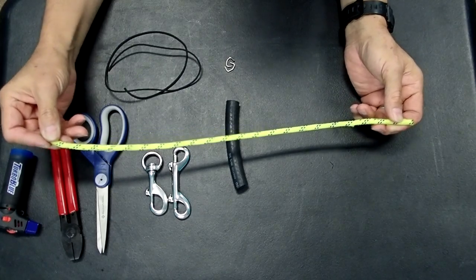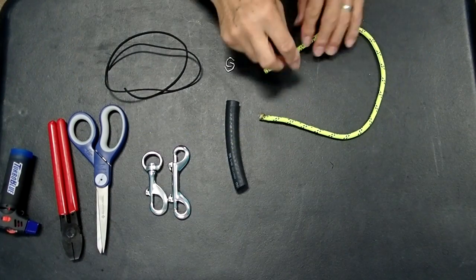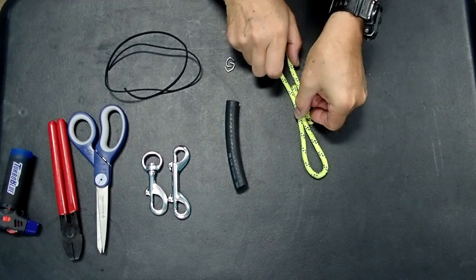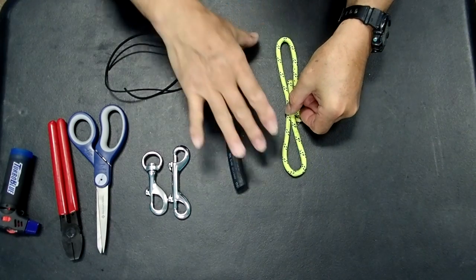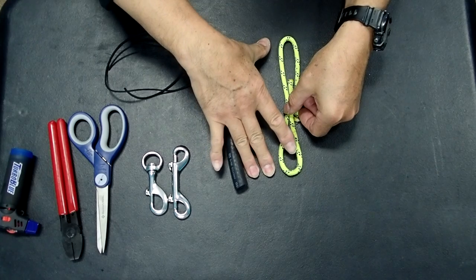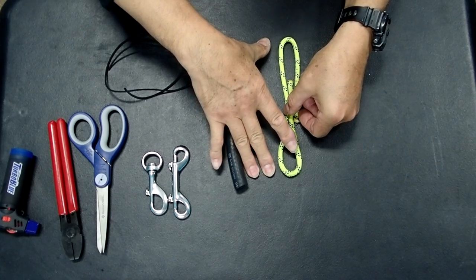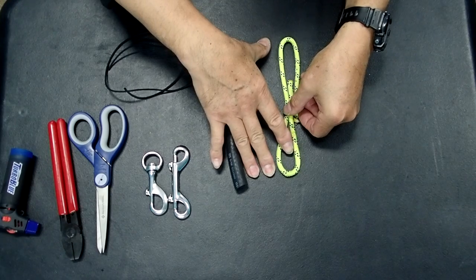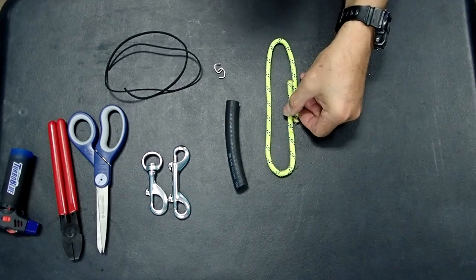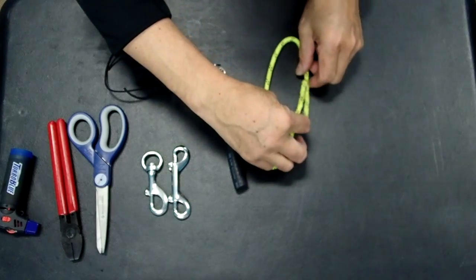What I have here is quarter inch synthetic line, and the way you determine how long you need is the ends of the folded, doubled over line need to be approximately the length of your fingers. So this is my middle finger to my thumb, that's the approximate length that we're going to be needing. And so everybody's dimensions are different.